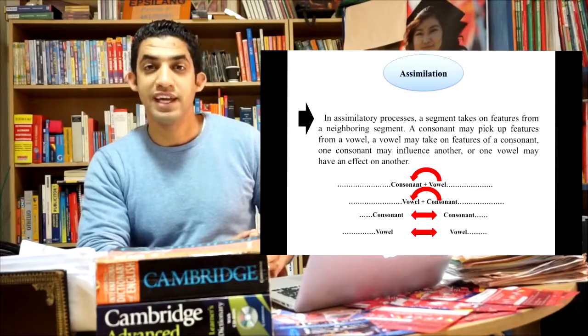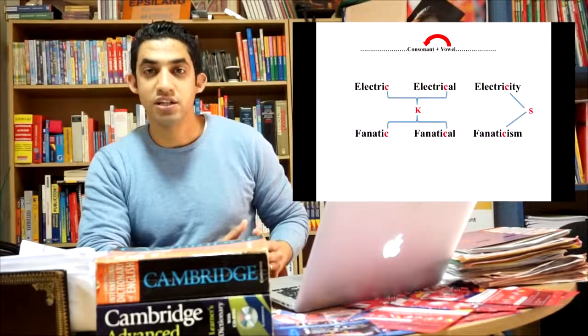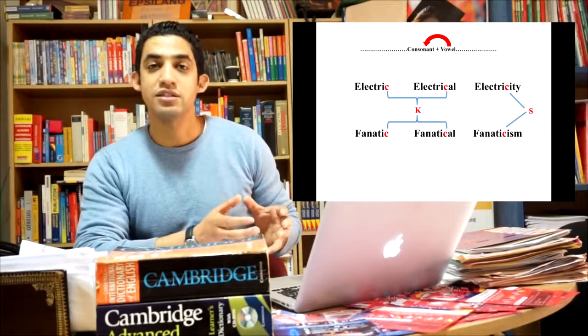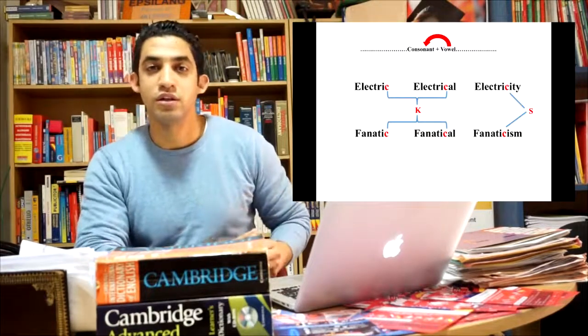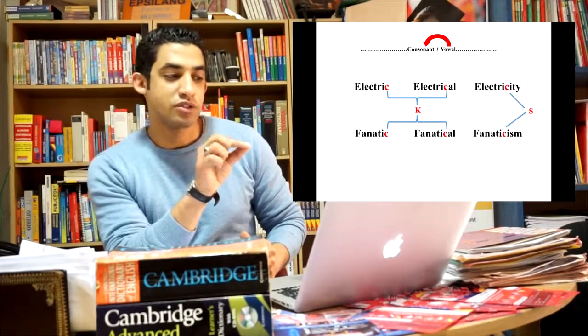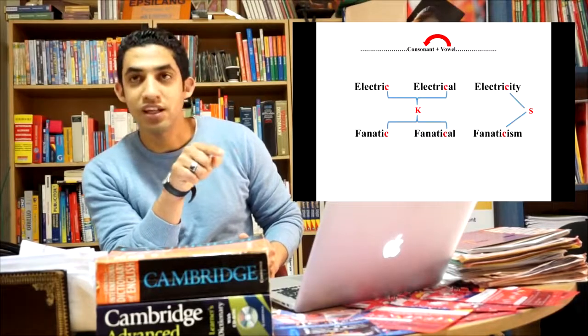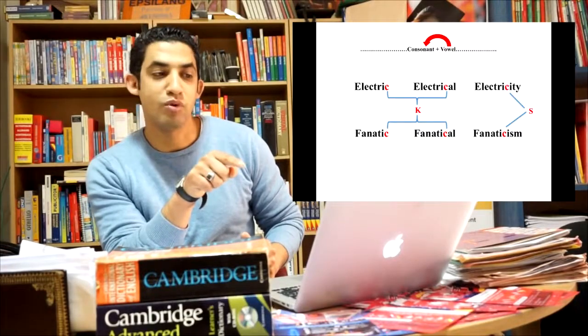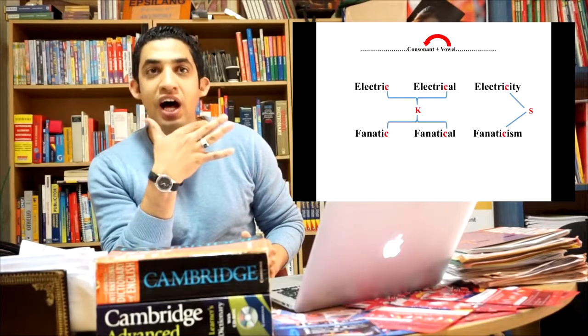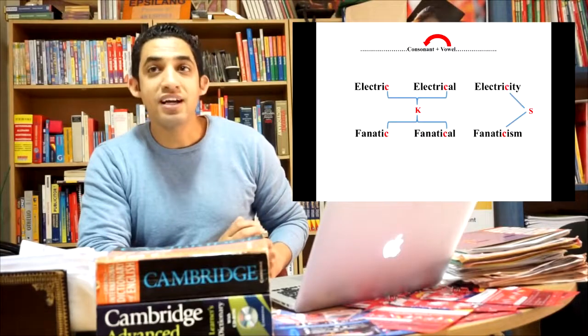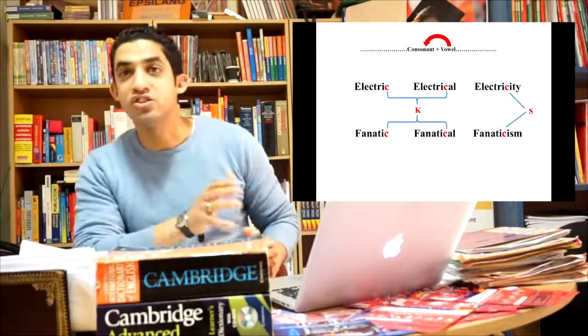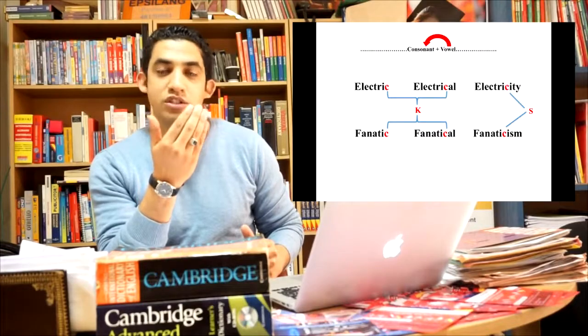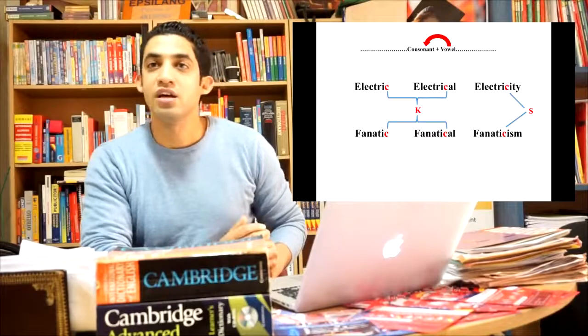Getting back to the example of electric, electrical, electricity; fanatic, fanatical, fanaticism. Here, this is a real example of a consonant that assimilates the vowel or the features of a vowel. We find that a consonant K is changed to S because it's taking the features of the segment in the morpheme -ity. The first segment in the morpheme -ity is a vowel which is a high front vowel I, and the K is a back consonant. K is changed to S which is a front consonant which is produced by raising the tip of the tongue to the alveolar ridge, to the front part of the mouth. While saying K, the K is produced by raising the back of the tongue to the back of the mouth.